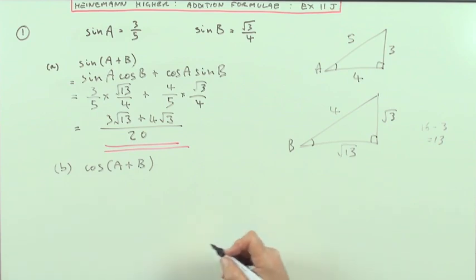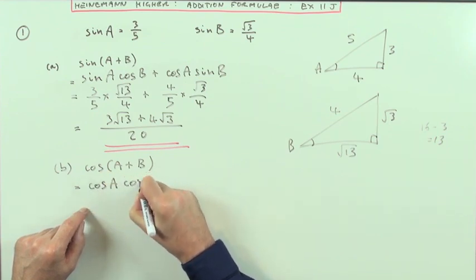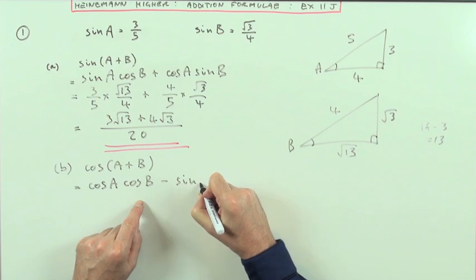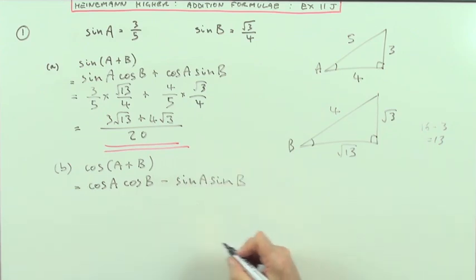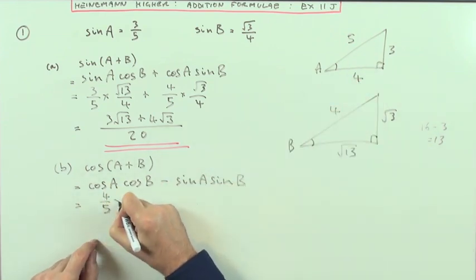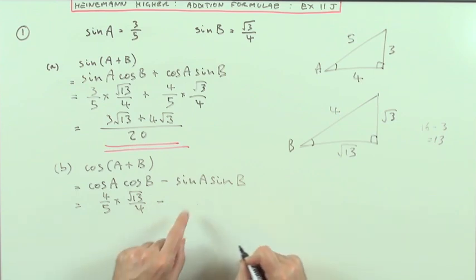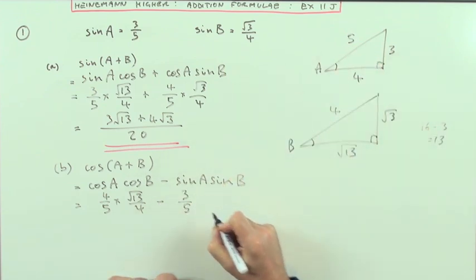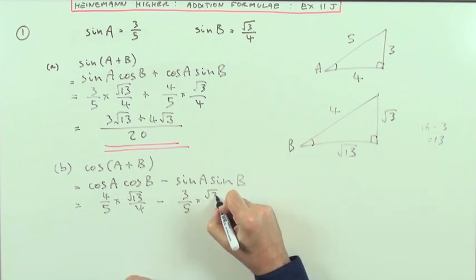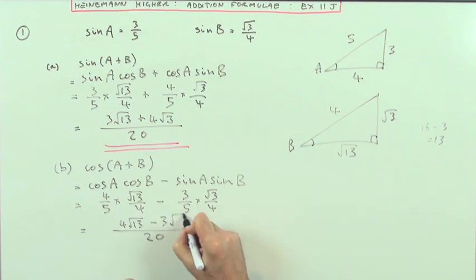For part (b), that's just a case of using another one of the addition formulae. This one turns out to be cos(A+B) = cos(A)cos(B) - sin(A)sin(B). It's just a case of learning them and then feeding those same numbers in. Cos(A) = 4/5, cos(B) = √13/4, sin(A) = 3/5, sin(B) = √3/4. They've both got the same denominator of 20, so the single fraction will be out of 20 and I've got (4√13 - 3√3)/20. There's not a great deal I could do about that - that would have to do as my exact answer.